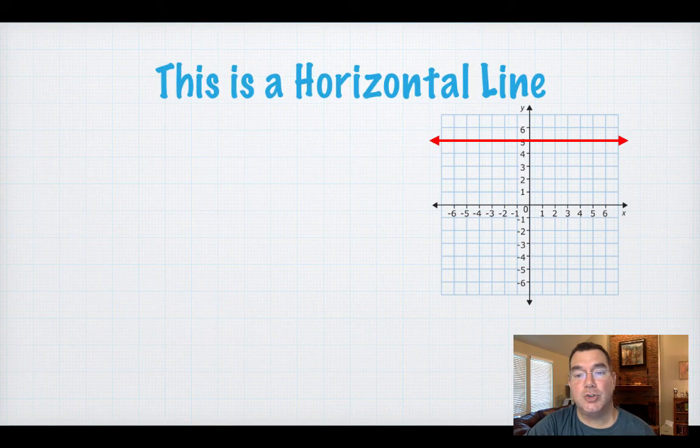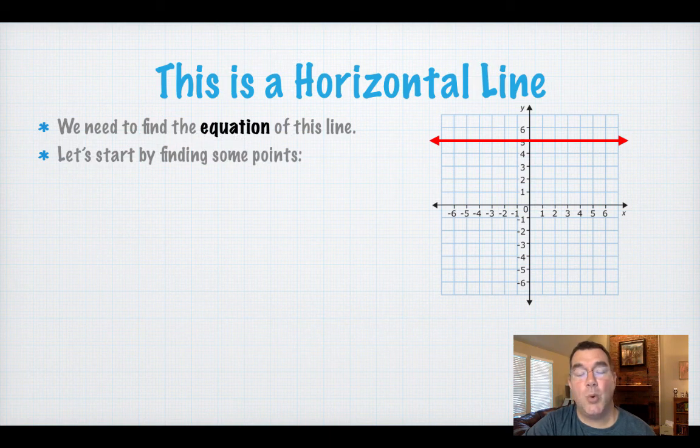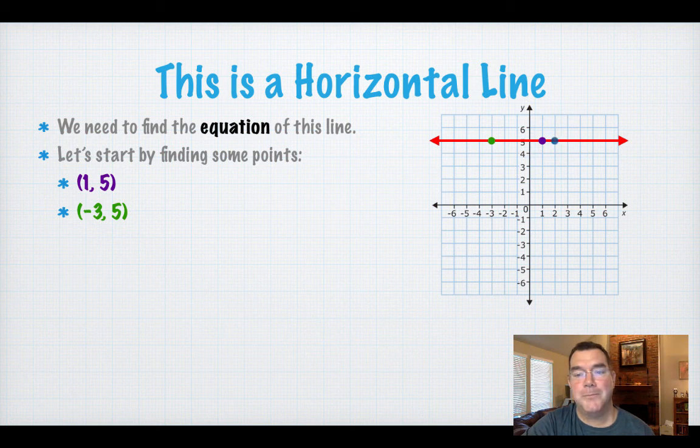I've drawn a red horizontal line on this graph and we're going to try and find the equation of that line. So I'm going to find some points that are on that line. This purple point has coordinates (1, 5). This green dot has coordinates (-3, 5). The blue dot has coordinates (2, 5).